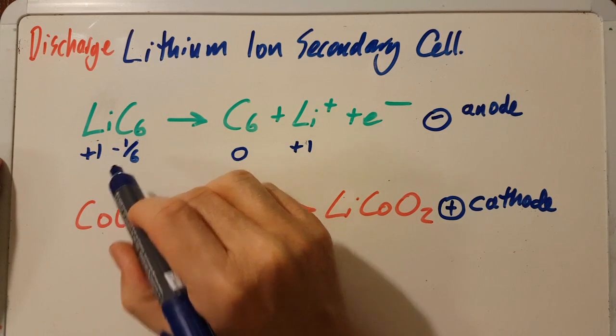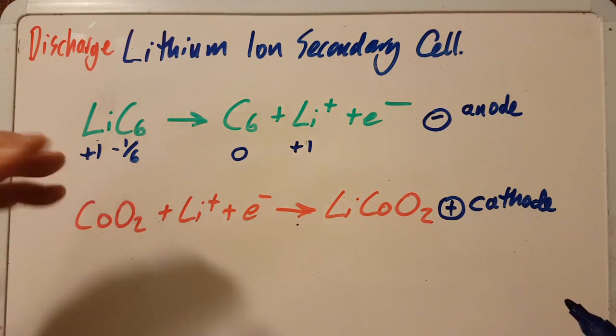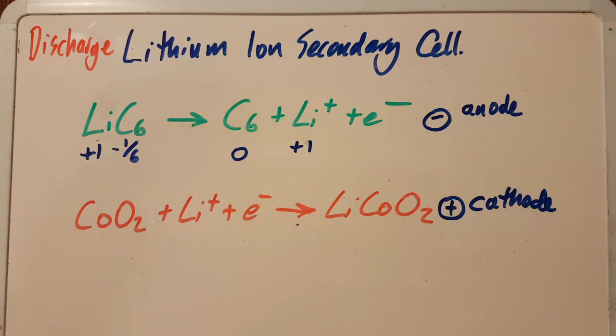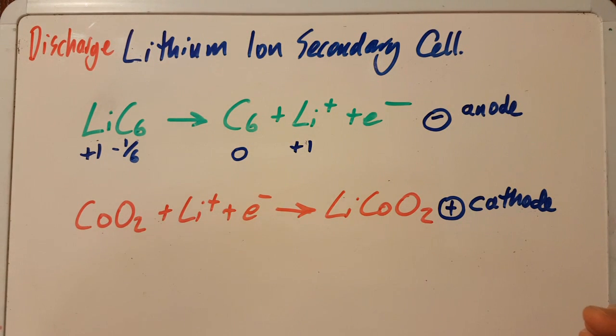This graphite as minus one-sixth for the oxidation states. That's a little disconcerting, but it's okay - you can have fractional oxidation states, but they're unlikely in IB. I think they asked about them once.